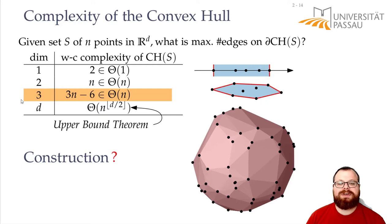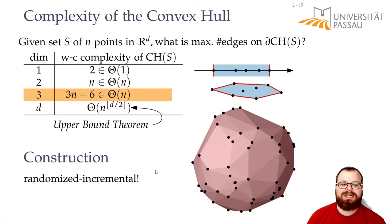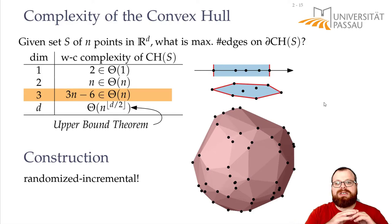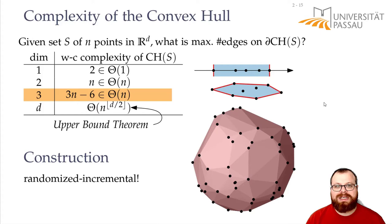What we want to do in today's lecture is figure out a construction for the 3D case, and we want to do it in a randomized incremental way. In a randomized incremental algorithm, we take all the given points, randomize their insertion order, and in every step we look at the first i points, for which we have already constructed a convex hull, and add the next point to construct the convex hull of the first i+1 points.